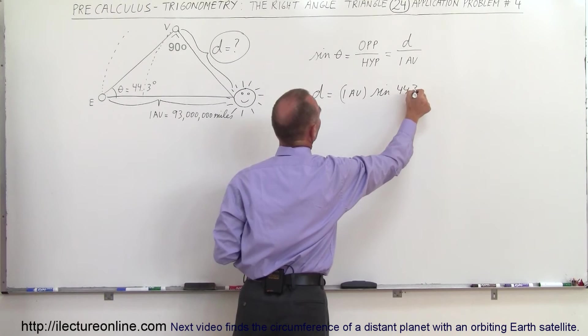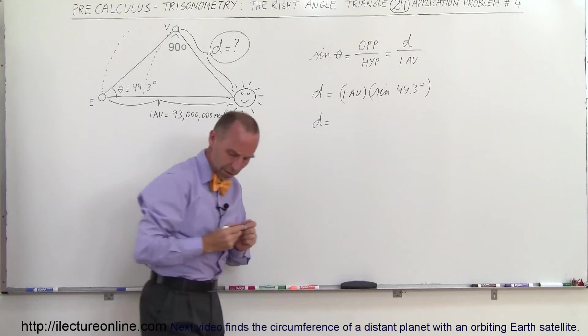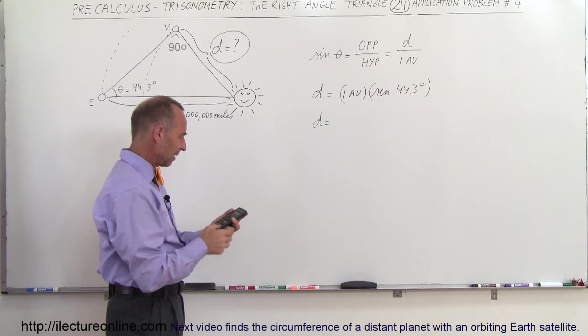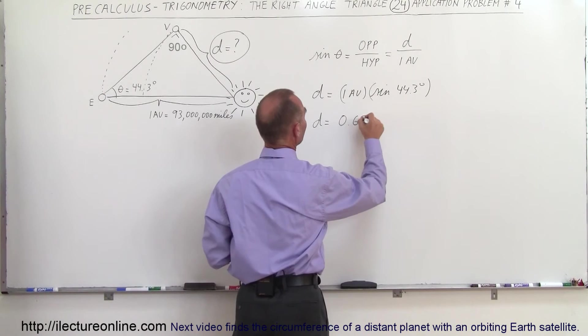And so d is equal to, use a calculator, so 44.3, take the sine of that and we get 0.6984. So that's 0.6984 astronomical units.